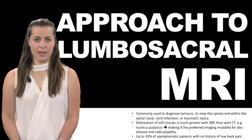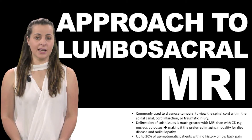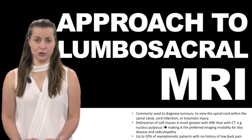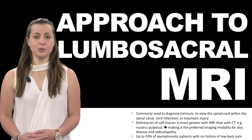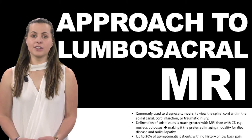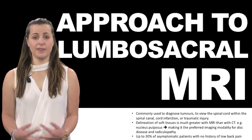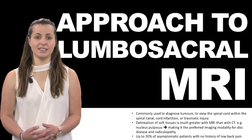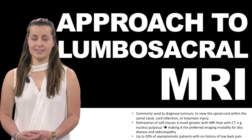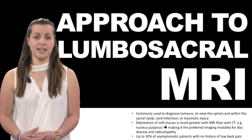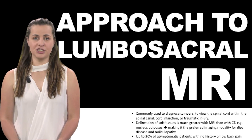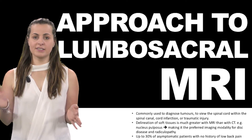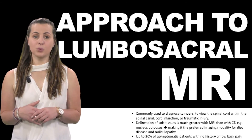Considering lumbar sacral MRI: MRI is a non-invasive technique that can be used in several planes to delineate bone and soft tissue. It is commonly used to diagnose tumours, view the spinal cord within the spinal canal, and assess for spinal cord infarction or traumatic injury. The delineation of soft tissues is much greater with MRI than CT — for example, the nucleus pulposus and annulus fibrosus are easier to differentiate due to their different water contents, making it the preferred modality for disc disease and radiculopathy. Up to 30% of asymptomatic patients show disc abnormalities. Key findings to look for include disc height, annular tears, degenerative signs, and endplate changes.